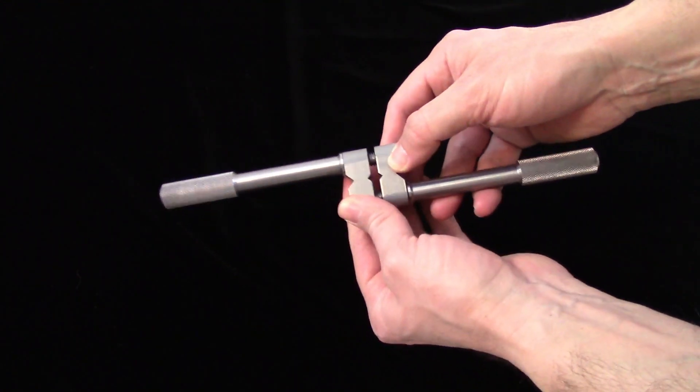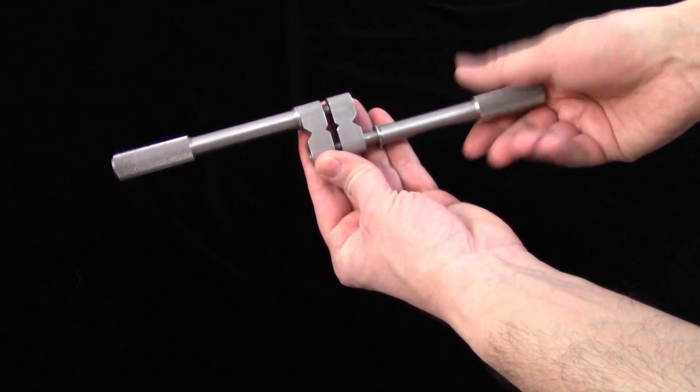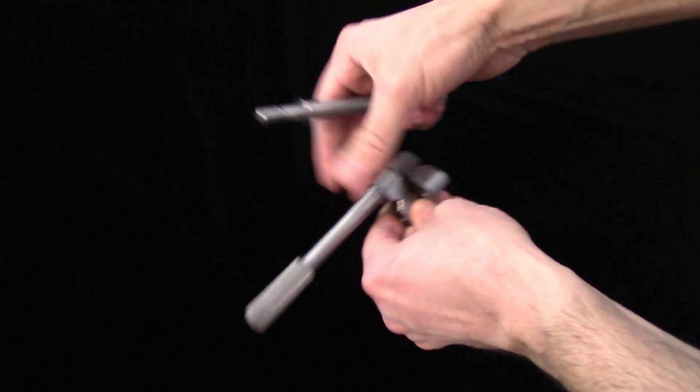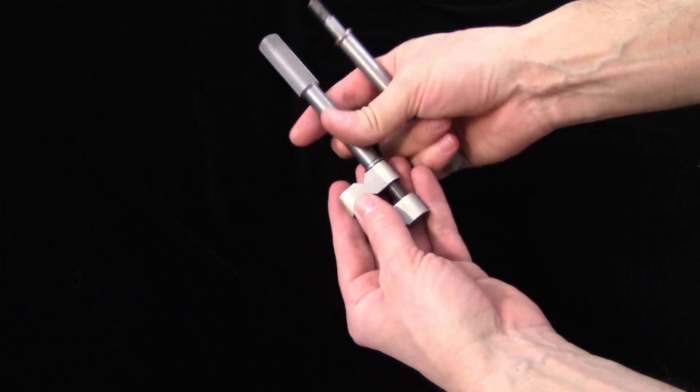In use, you just unscrew the two handles so the jaws can be spread apart to accept the tap. If you unscrew the handles completely, you can flip the jaws around to the other side so you can use the opposite groove to hold larger taps.